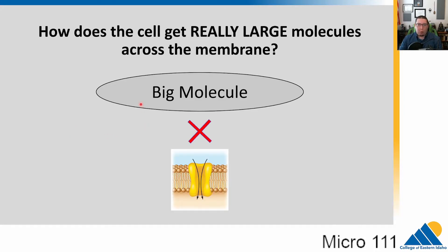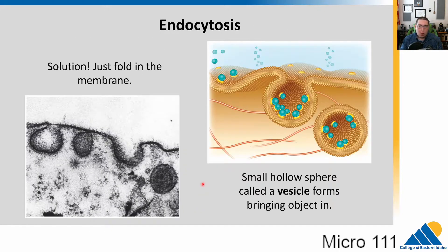We have a problem: a really big molecule that's not going to fit through a tiny transmembrane protein, but we still need to get this molecule into our cell. How do we do that? We use a process called endocytosis. Endo means within, cytosis means to bring into the cytoplasm — so bringing within the cytoplasm.